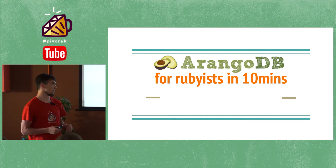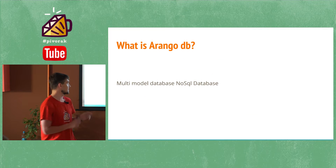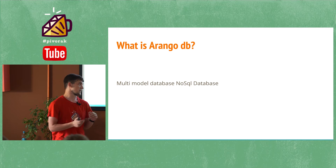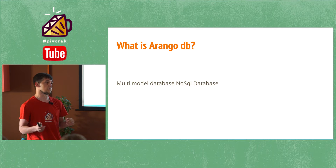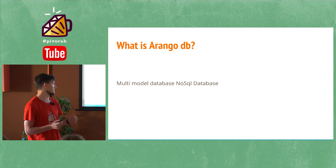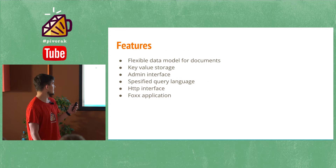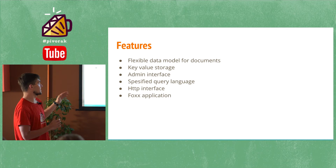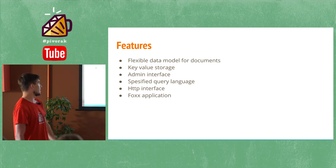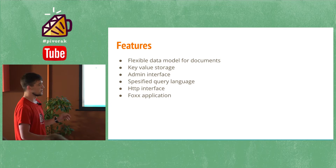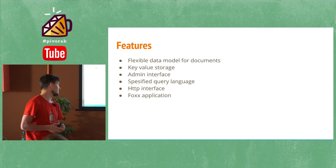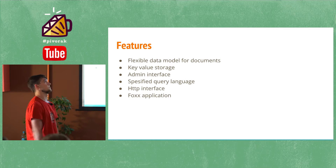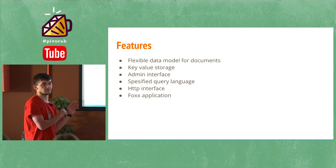ArangoDB is a multi-model database. It works like a NoSQL database, but it also has graphs, an awesome query language, awesome tools. It's a small NoSQL database with a flexible data model for documents — simple documents like JSON. You can use it like key-value storage, it has an awesome admin interface, another query language, another DSL, an HTTP interface, and a very flexible framework, though this framework works in Node.js.